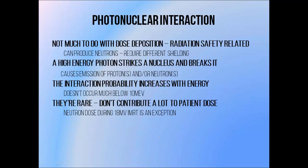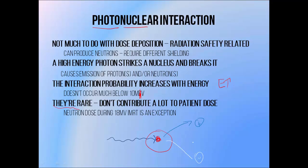Photonuclear interaction is the highest energy photon interaction type that we care about in radiotherapy. As the name implies, it is an interaction between a photon and an atomic nucleus. It happens when a high energy photon strikes a nucleus and causes it to break apart, emitting nuclear particles like protons and neutrons. This is why we only see this interaction type in very high energy photon beams, becoming significant at beam energies of 10 MV and above. But even in high energy beams this interaction is relatively rare, so it doesn't contribute very much to patient dose.